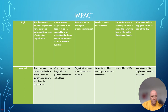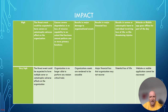High impact means the threat event could have a severe or catastrophic adverse effect. The organization can experience severe degradation or loss of mission capability to the extent that it cannot perform one or more primary business functions. This results in major damage to organizational assets, major financial loss, and severe or catastrophic harm to individuals involving loss of life or life-threatening injuries. A real-world example is a website or mobile app going offline for a significant part of the day.